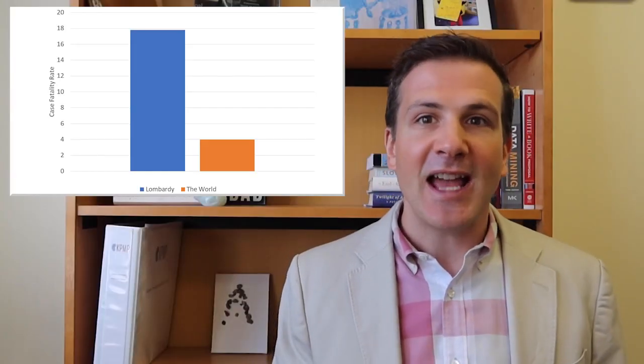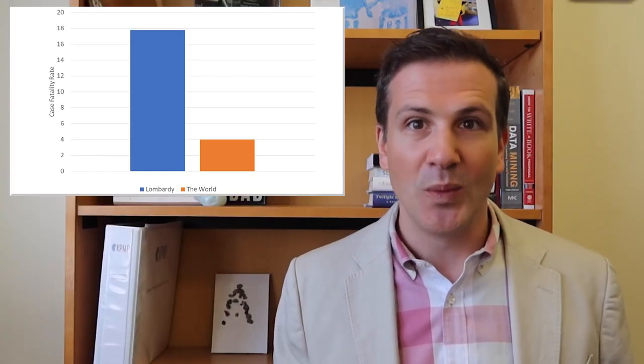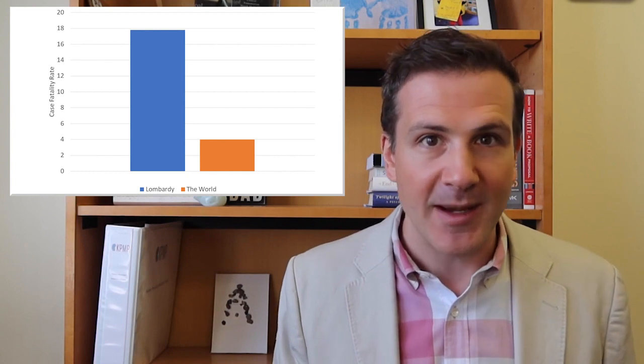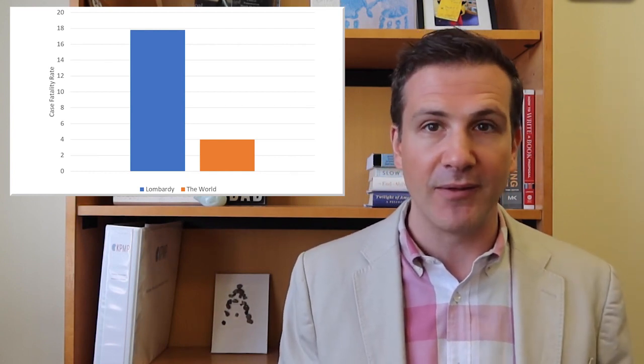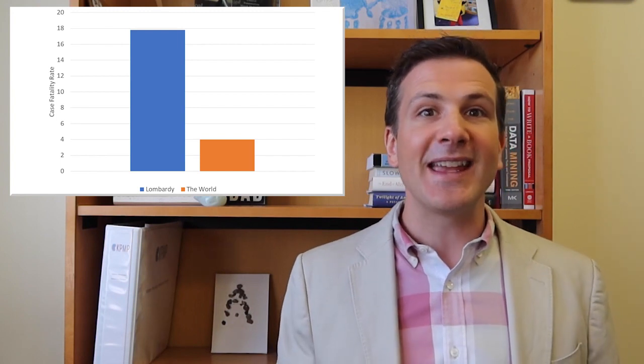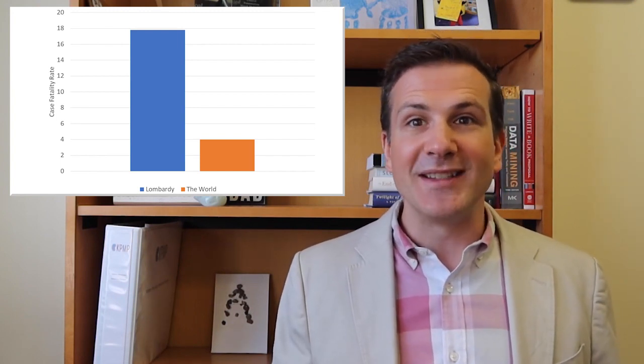For example, the case fatality rate in Lombardy, Italy was a dizzying 17.8%. Looking at that figure alone, compared to the global case fatality rate of around 4%, we might think that Lombardy was a disaster zone.